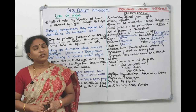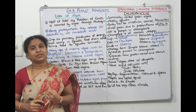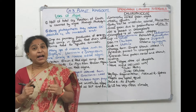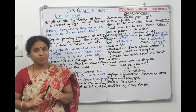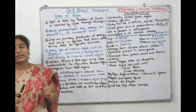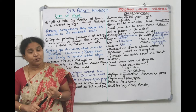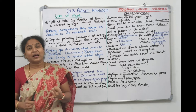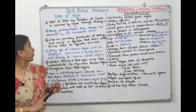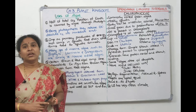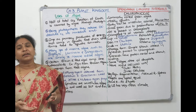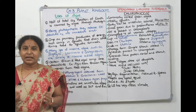Economic importance of algae: First, half of the total CO₂ fixation on Earth is done by algae through photosynthesis. Second, they release dissolved oxygen into aquatic environments for aquatic animals to survive. Third, they are primary producers of energy-rich compounds in the aquatic food chain.